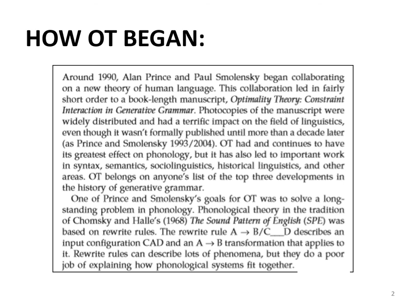After the advent of optimality theory, those rewrite rules took a new turn. The rule describes an input configuration C, A, D and an A-to-B transformation applied to it — the string C, A, D becomes C, B, D. Rewrite rules can describe a lot of phenomena, but they do a poor job of explaining how phonological systems fit together, and that is why Prince and Smolensky came up with a novel idea to generate the surface form SR from the UR.